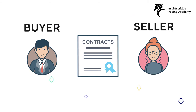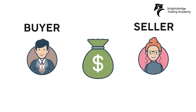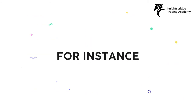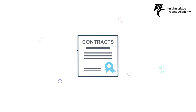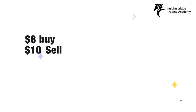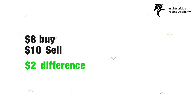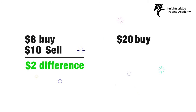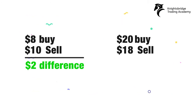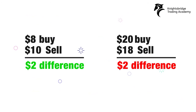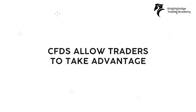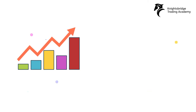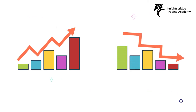If the difference is negative, then the buyer pays instead to the seller. For instance, if you buy a Contract for Difference at $8 and sell at $10, then you will receive the $2 difference. If you buy a CFD at $20 and sell at $18, then you pay the $2 difference. CFDs allow traders to take advantage of prices moving up, long positions, or prices moving down, short positions, on underlying financial instruments.